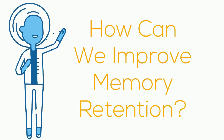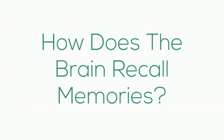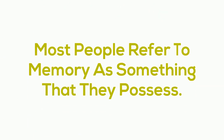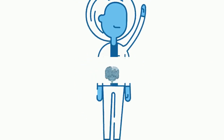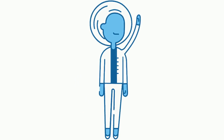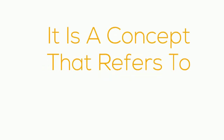In order for us to answer the question of how we can improve memory retention, we have to look at the fundamental question of how the brain recalls memories. Most people refer to memory as something that they possess, however the expression 'I lost my memory' is technically incorrect. Memory doesn't exist in the same way that a part of your body exists — it is not physically present; rather, it is a concept that refers to the process of remembering.